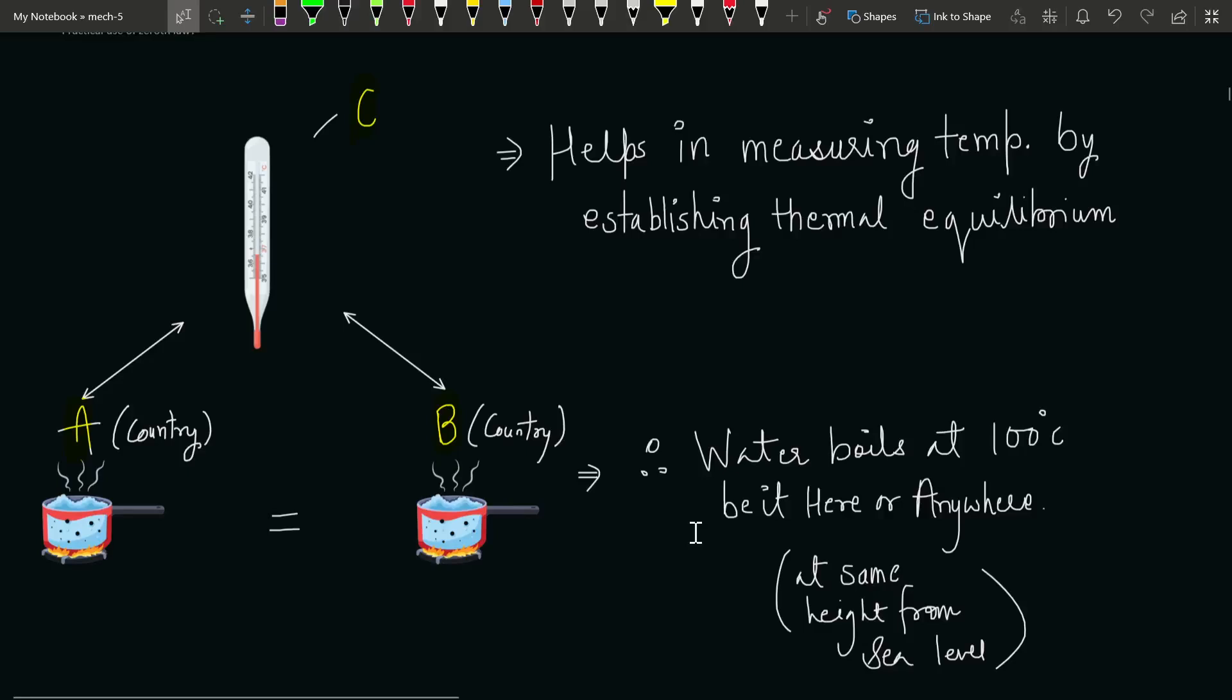What is the physical significance of the zeroth law? It considers three objects, let's say A, B, and C. It says when A and C are separately in thermal equilibrium with each other, and C and B are separately in thermal equilibrium with each other, then automatically A and B will already be in thermal equilibrium with each other. That means they'll have the same temperature.